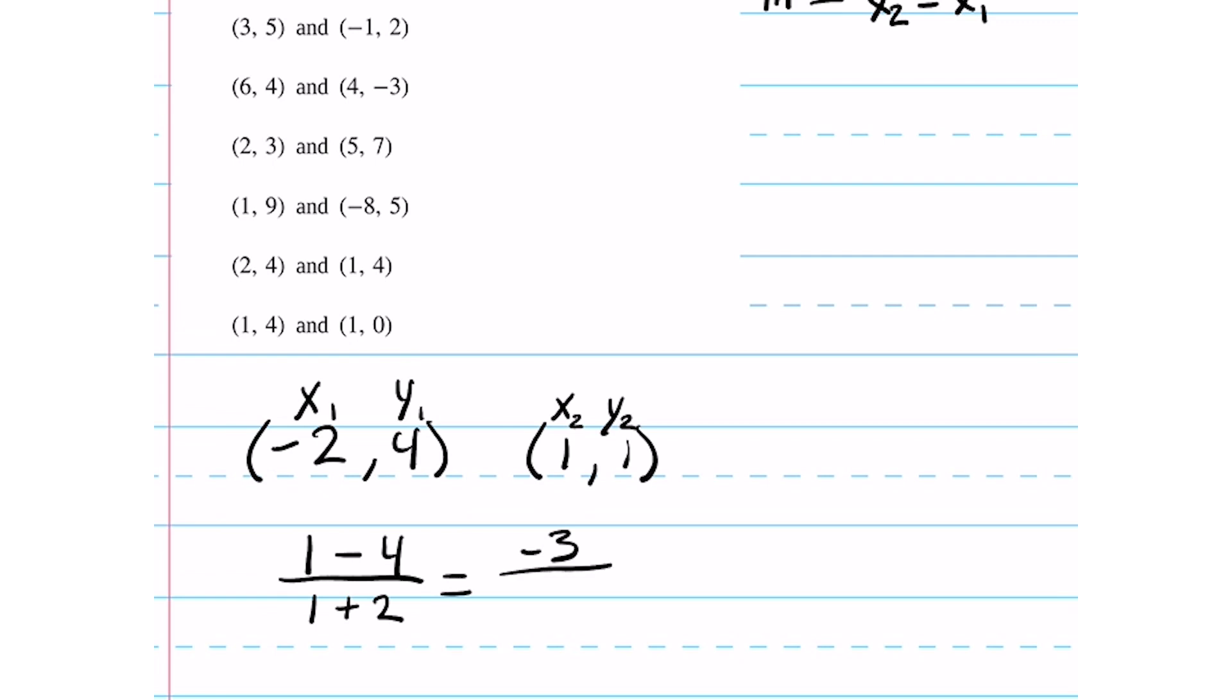After evaluating the equation, we see that it comes to negative three over three, which is equal to negative one. Because the slope is negative, that means that the line is decreasing.